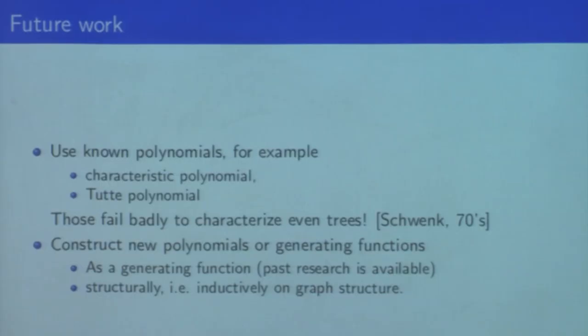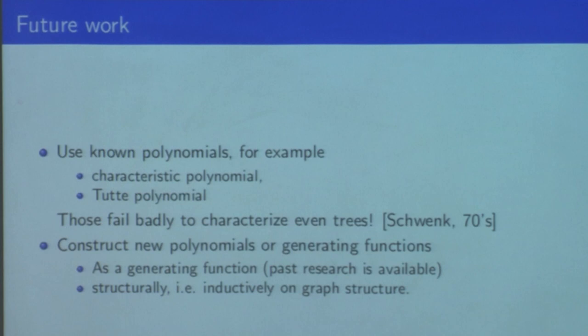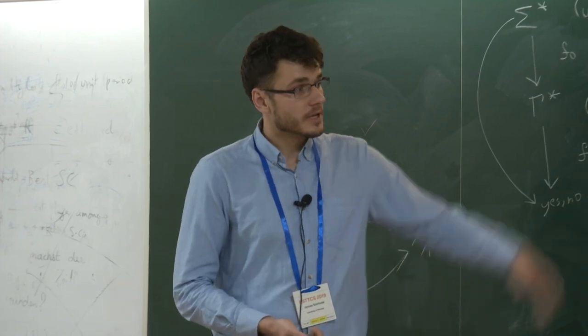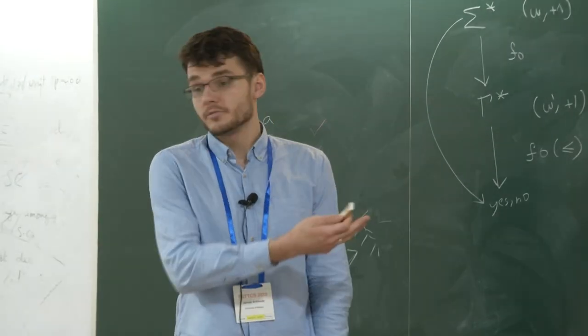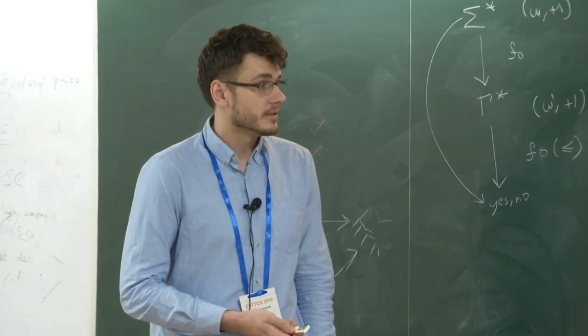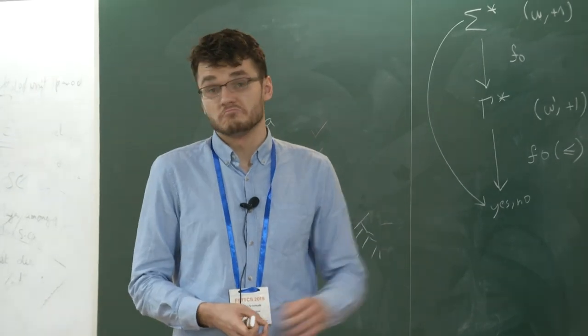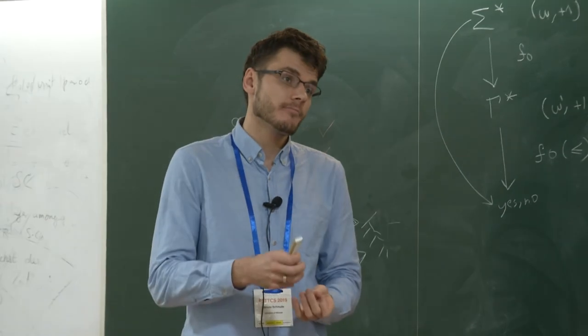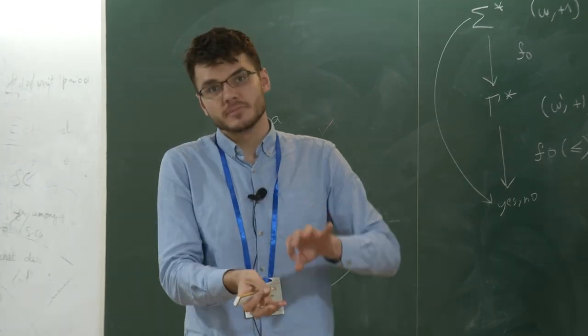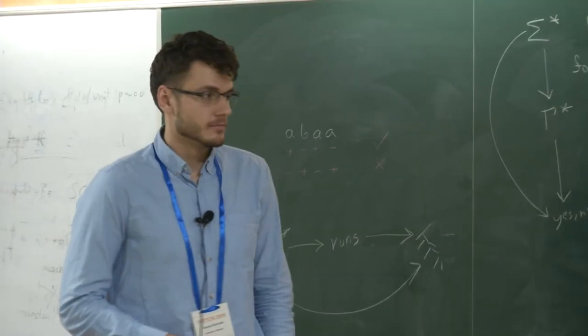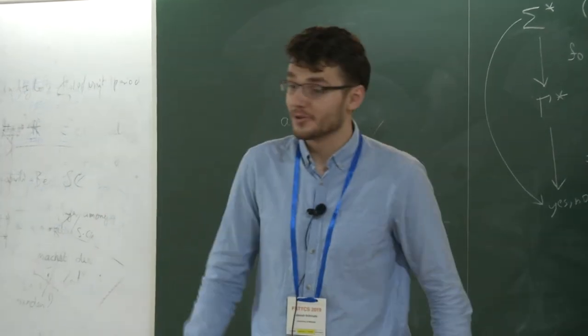Another example would be to construct another way of finding polynomials as generating functions, maybe counting some patterns, or maybe inductively on graph structure. Maybe it is worth mentioning that, for example, Tutte polynomial admits both kinds of definitions. It can be defined as a generating function that counts some patterns, but also can be defined structurally. It can be constructed recursively from a graph that has got deleted edge, deleted vertex—from subgraphs. This is all what I wanted to say. Thank you.